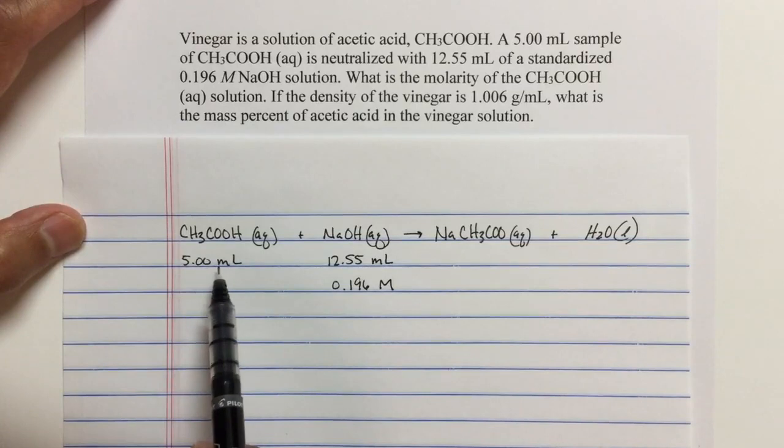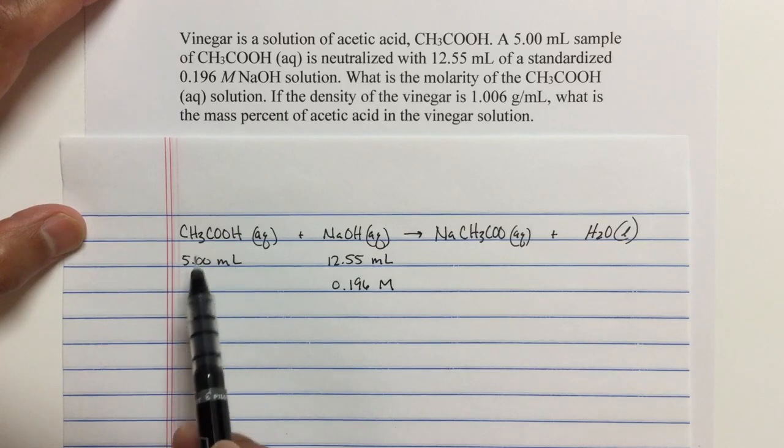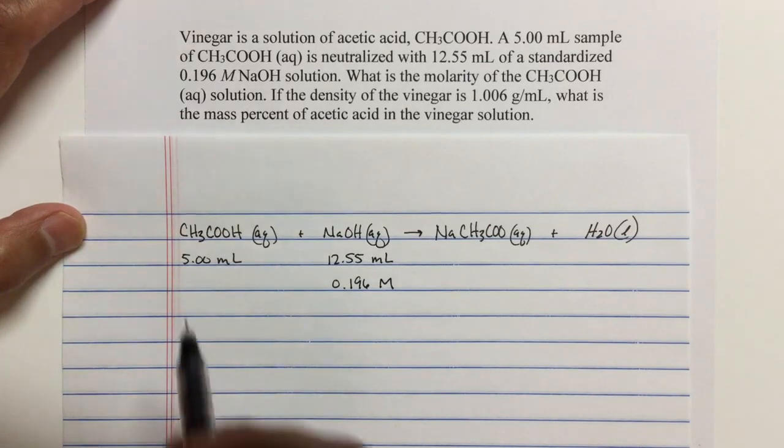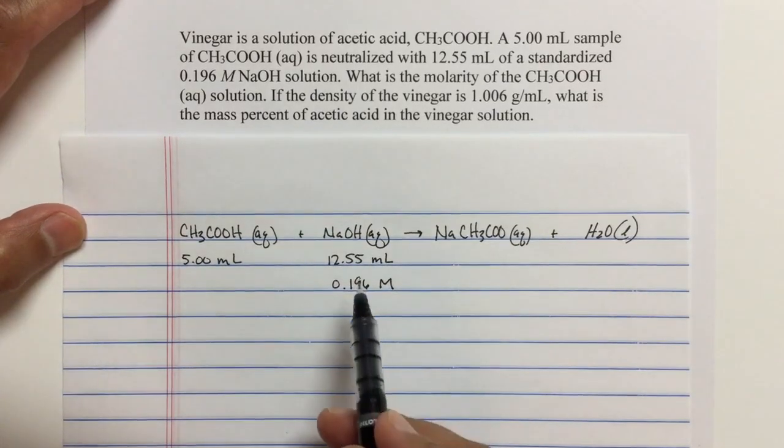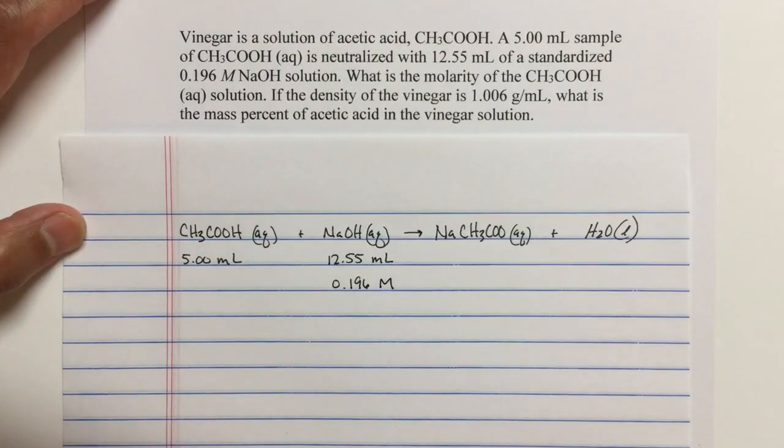So we have five milliliters of the acetic acid solution that goes into the flask. Remember, if you go review the titration experiment, the titration lab, and the titration notes, we treat the acetic acid with some indicator. And when we add the sodium hydroxide, the indicator turns a pink color telling us that the reaction is finished, that all of the acid has been neutralized with the base.